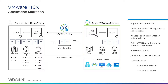HCX creates a secure, bi-directional connection between the environments and brings a wealth of features including built-in VPN with SuiteB encryption, traffic engineering, LAN optimization, deduplication and compression, layer-2 extension capabilities, and various migration methods. A site pair establishes the connection needed for management, authentication, and orchestration of HCX services across source and destination environments.